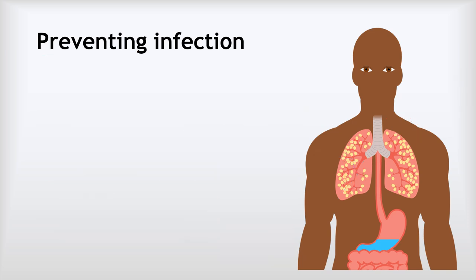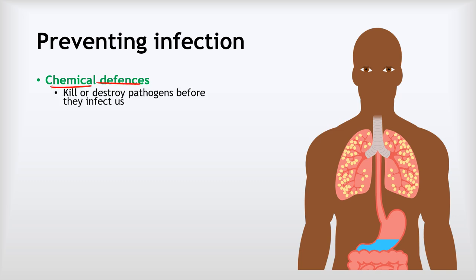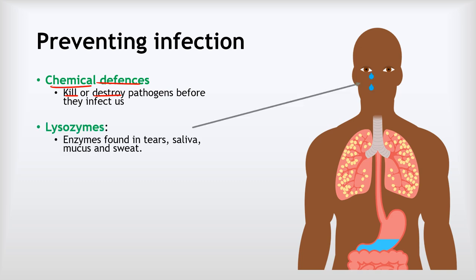Our next way of preventing infections is what we call chemical defences. Chemical defences are there to kill or destroy pathogens before they infect us. There are two to know about. The first is lysozymes — enzymes found in our tears, saliva, mucus and sweat. What they do is kill some bacteria by breaking down their cell walls. Not all bacteria — there are plenty on our skin that can survive lysozymes — but lots of other bacteria are killed by them and can no longer infect us.